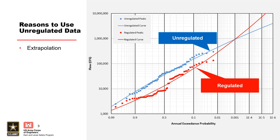When analytical frequency curves, such as log Pearson 3, are fit to regulated data, the impacts of regulation can be dramatic, especially for the extrapolated portion of the curve, resulting in significant over- or underestimation of the risk. When there is upstream regulation, you will need to assess whether the regulation effects are appreciable, and if so, perform analysis to remove the effects of regulation from the flow or volume data.